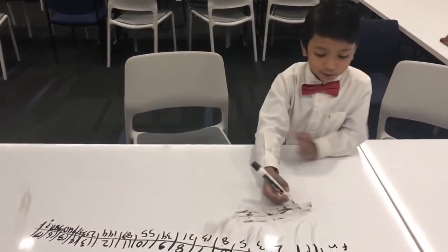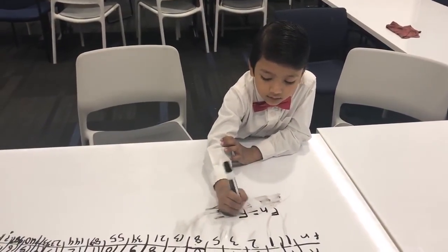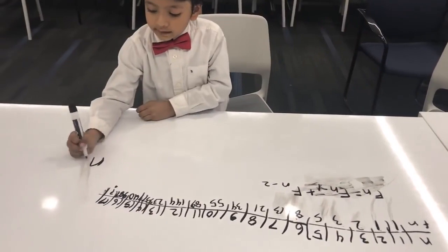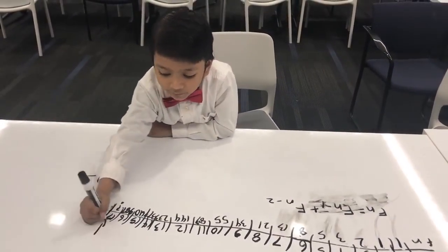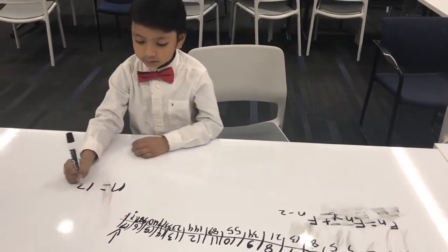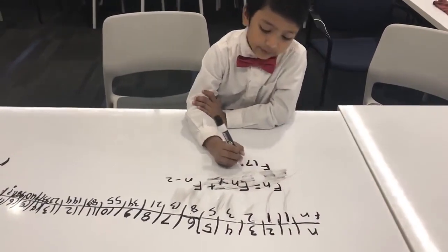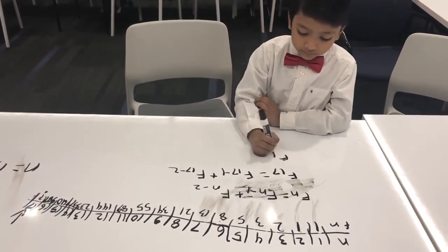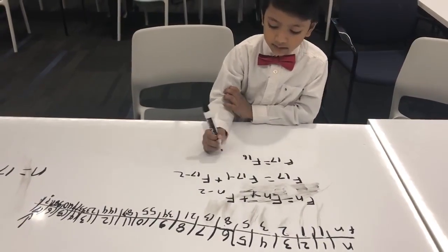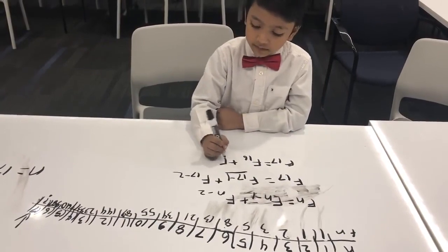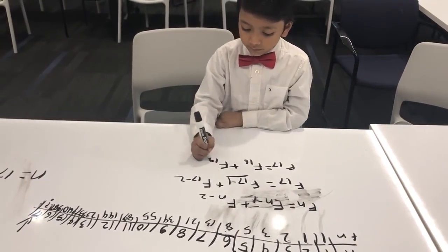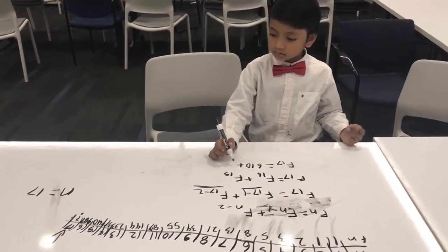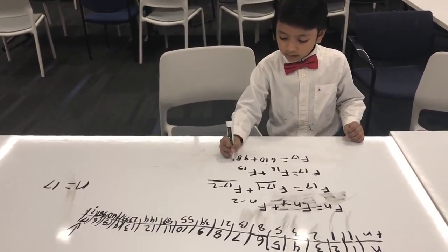Now let's use the recursive equation. F(n) equals F(n−1) plus F(n−2). Do you know what n is? Well, look on top of the question mark — it's 17. So n equals 17. That means F(17) equals F(16) plus F(15), which is 987 plus 610.